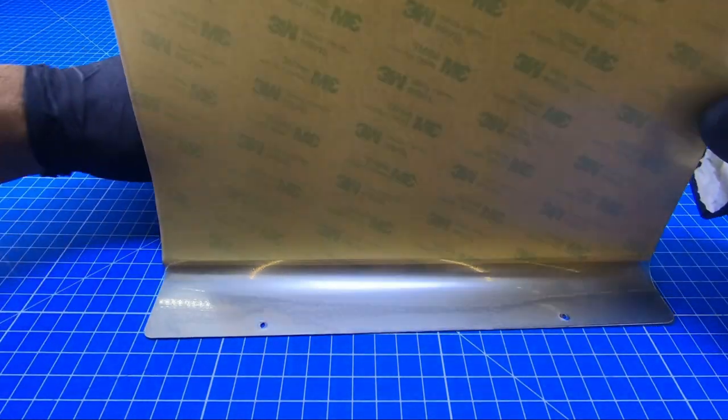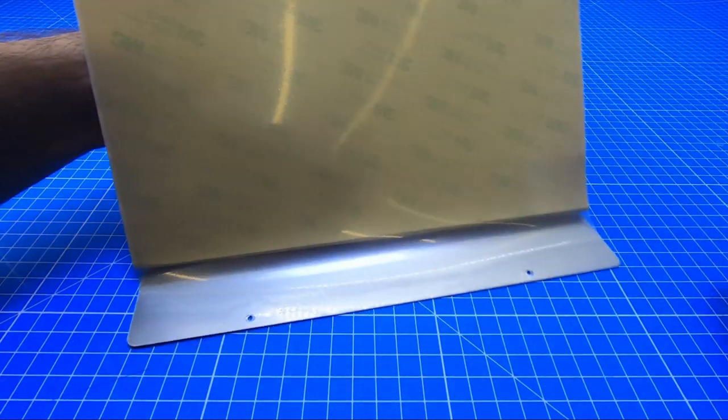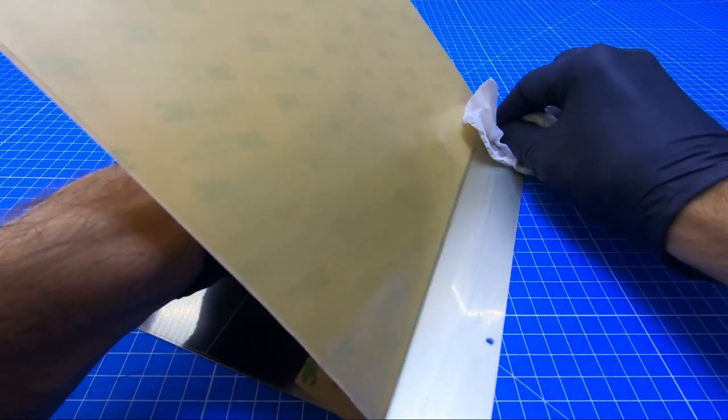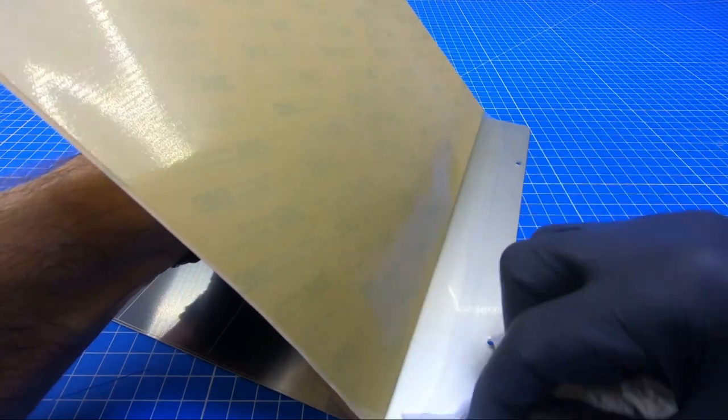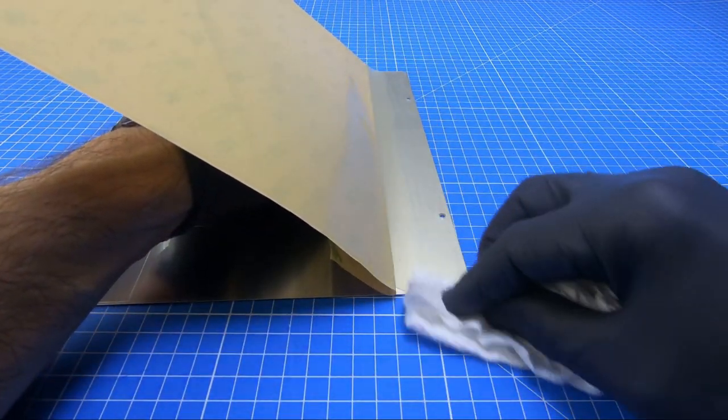After you position the part, take some cloth, paper towel, or whatever slides well on the surface, and push the bubbles out.